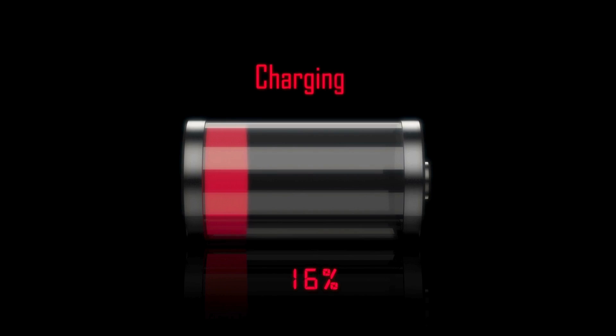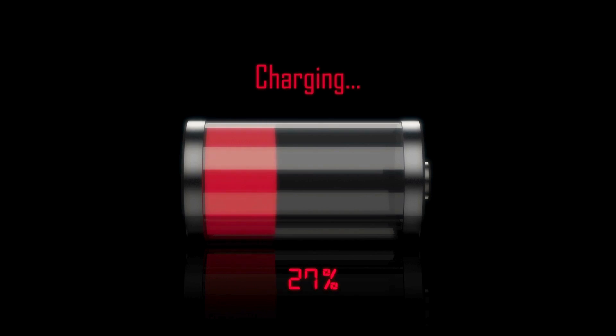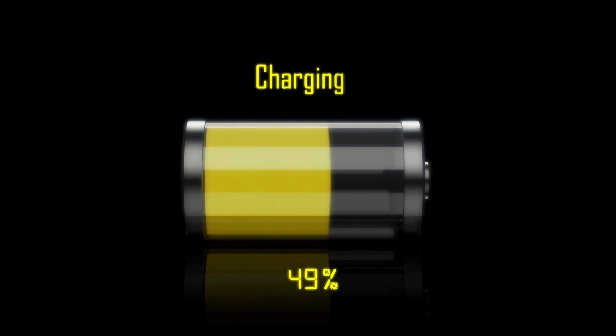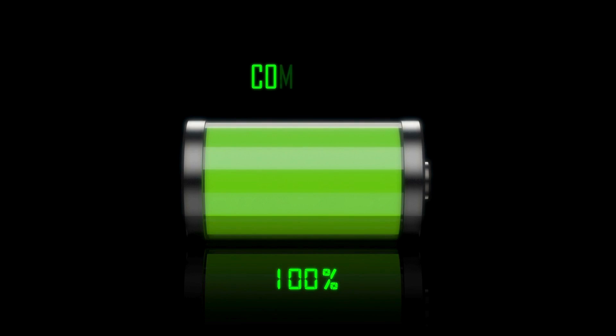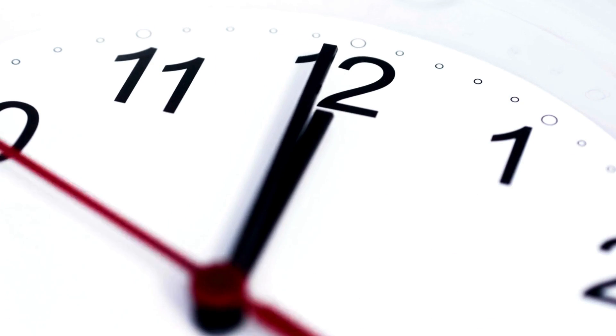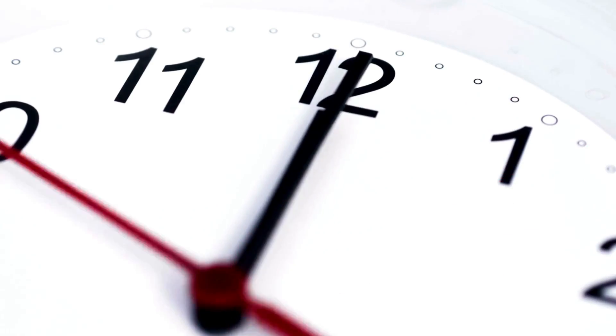Quick Charge is designed to speed up charging times considerably by allowing devices to charge at higher voltages and currents. This technology is particularly beneficial for fast charging needs, ensuring you spend less time tethered to power outlets. Quick Charge focuses on delivering fast charging speeds and is primarily for Android devices running a Qualcomm Snapdragon processor.